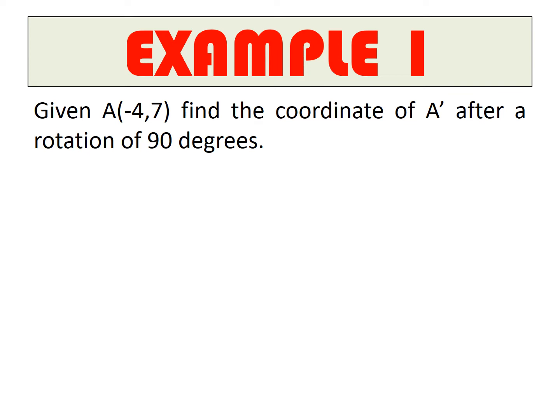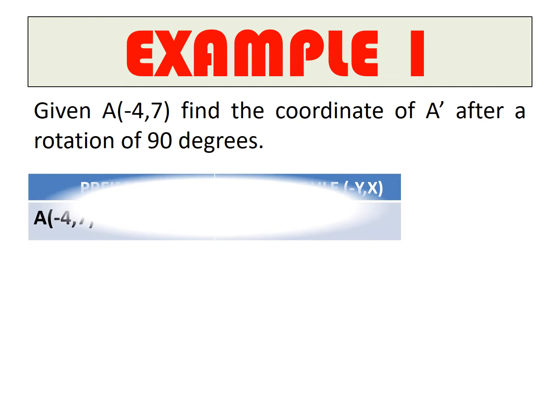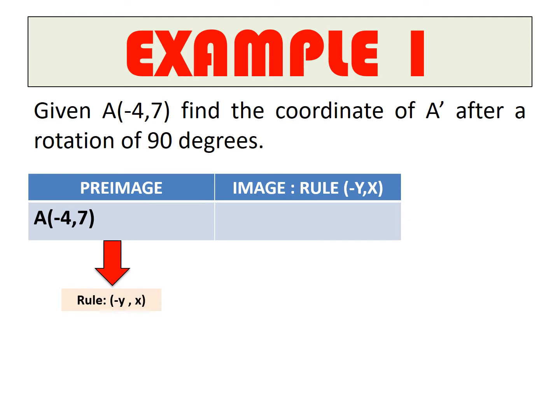Example 1: Given point A at (-4, 7), find the coordinate of image A prime after a 90° rotation. Create a table. Because it's 90°, you flip the coordinates — 7 (which was Y) becomes X, and -4 (which was X) becomes Y. Then you change the sign of the new X: 7 positive becomes negative 7. The answer is (-7, -4).